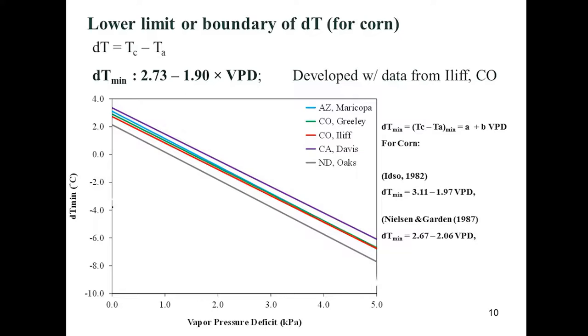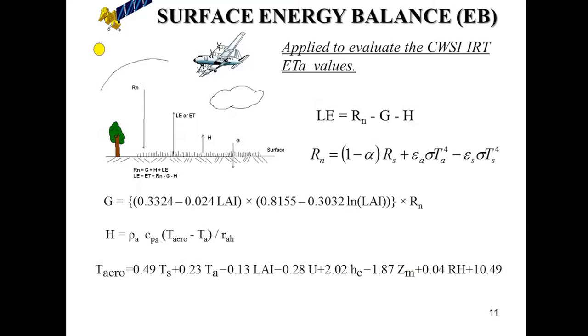There have been several studies setting the baseline for the lower non-stress threshold of the crop water stress index. We did one in Greeley and one in Ithaca, and Hansen and others were involved. This one is very close to the Arizona baseline developed by the ARS for corn. There is some variability with North Dakota and California, showing some influence of microclimate and varieties. The soil water balance is also an option for estimating evapotranspiration.